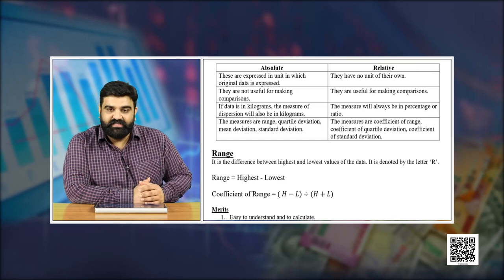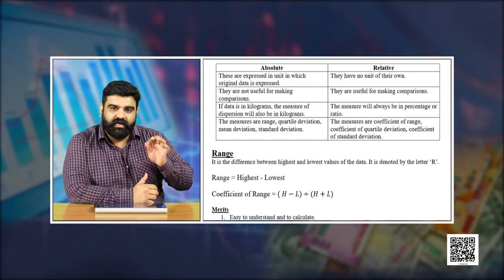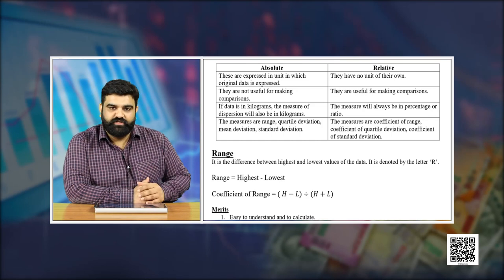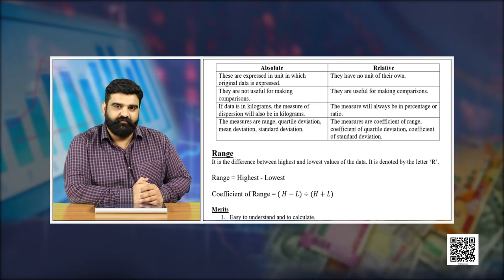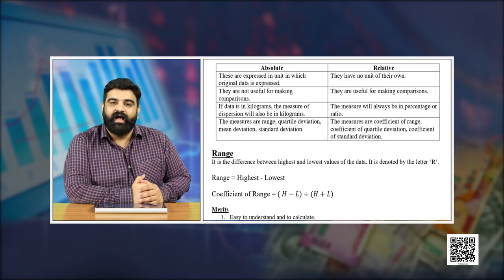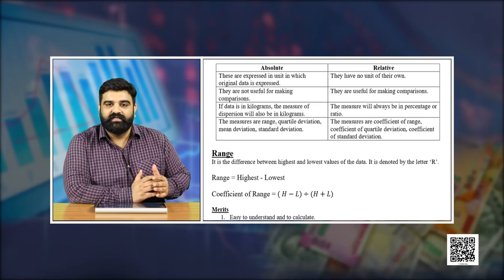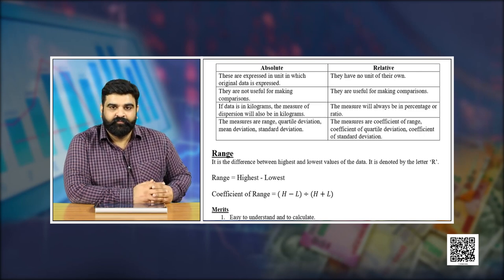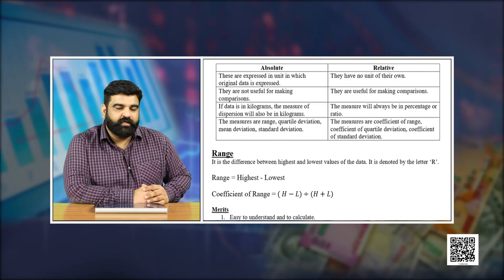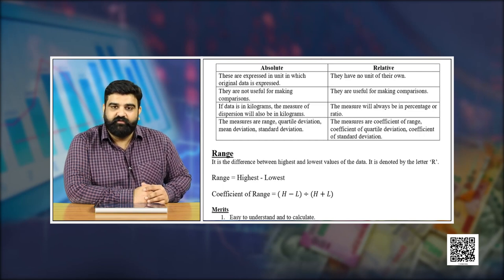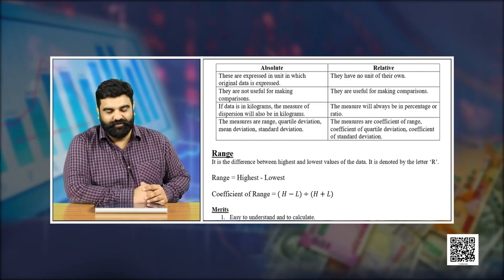In relative measure of dispersion, values can be used to make comparisons. The absolute measures of dispersion include mean deviation, quartile deviation, range, and standard deviation. The relative measures of dispersion are calculated as the coefficient of range, coefficient of quartile deviation, coefficient of mean deviation, and coefficient of standard deviation.